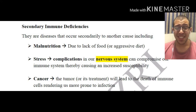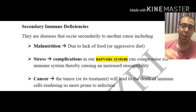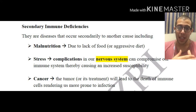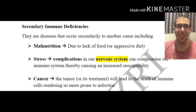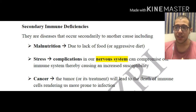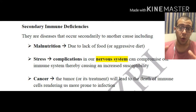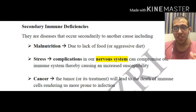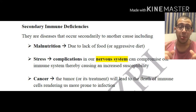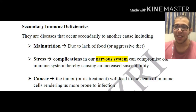Secondary immune deficiencies are diseases that occur secondarily to another primary cause, which we are going to be detailing shortly. The first cause is malnutrition, due to the lack of food or an aggressive diet. Second, we have stress — complications in our nervous system can compromise our immune system, triggering these diseases.